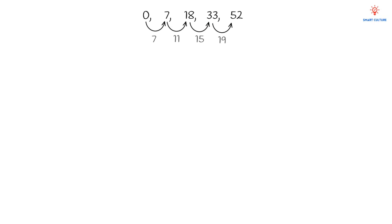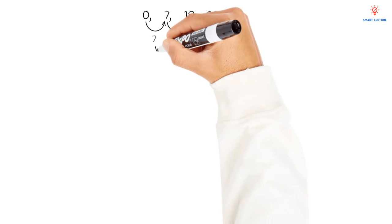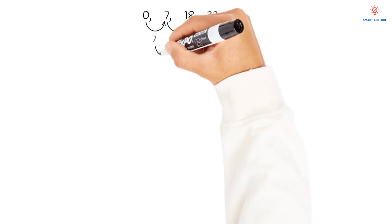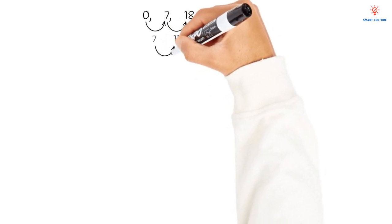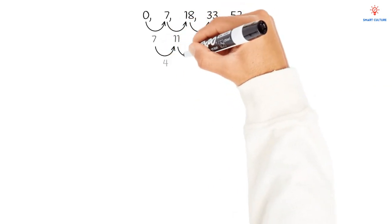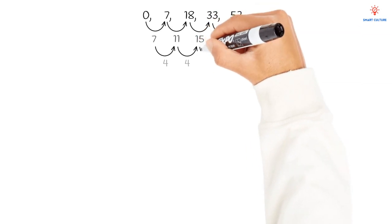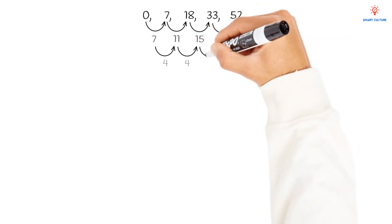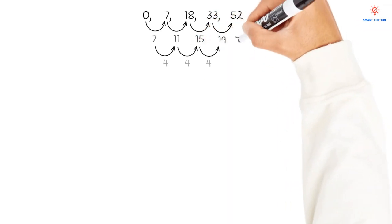Now let's move on to the second difference. The difference between 7 and 11 is 4; between 11 and 15 is also 4; and between 15 and 19 is also 4. So we have a constant second difference of 4.